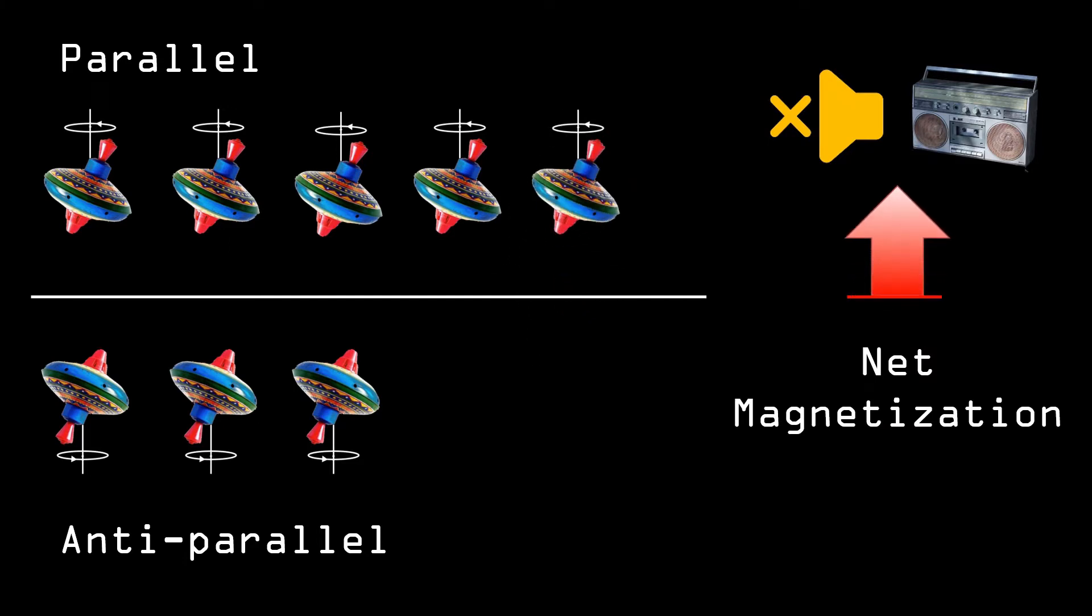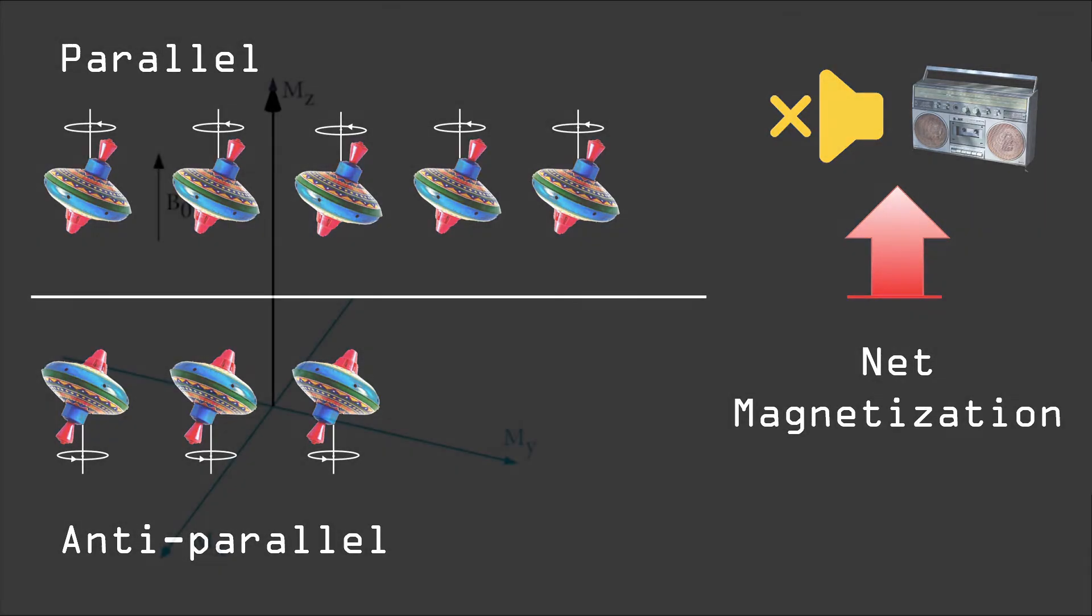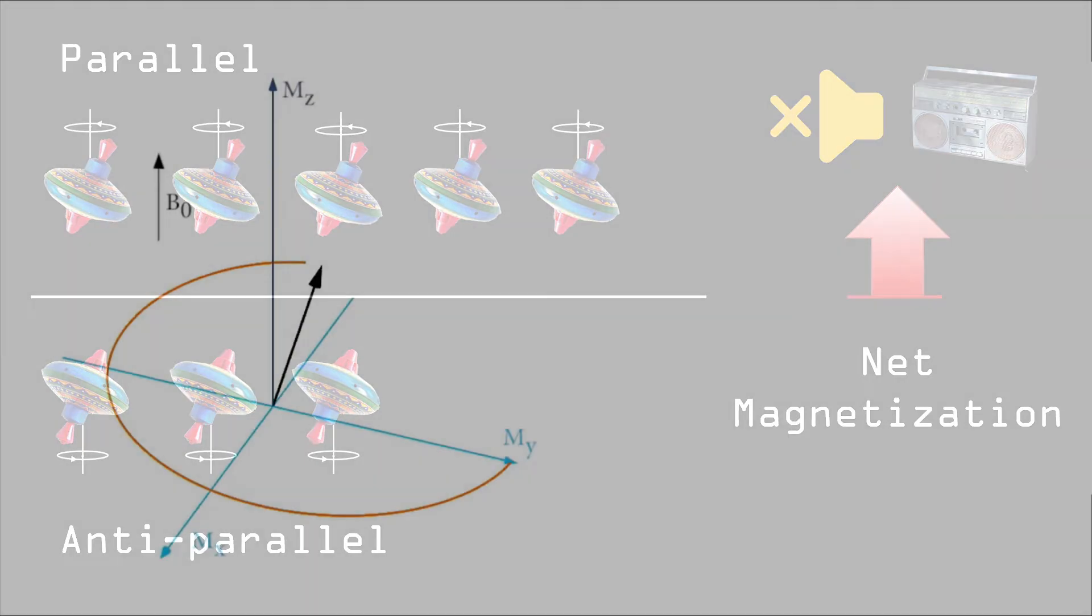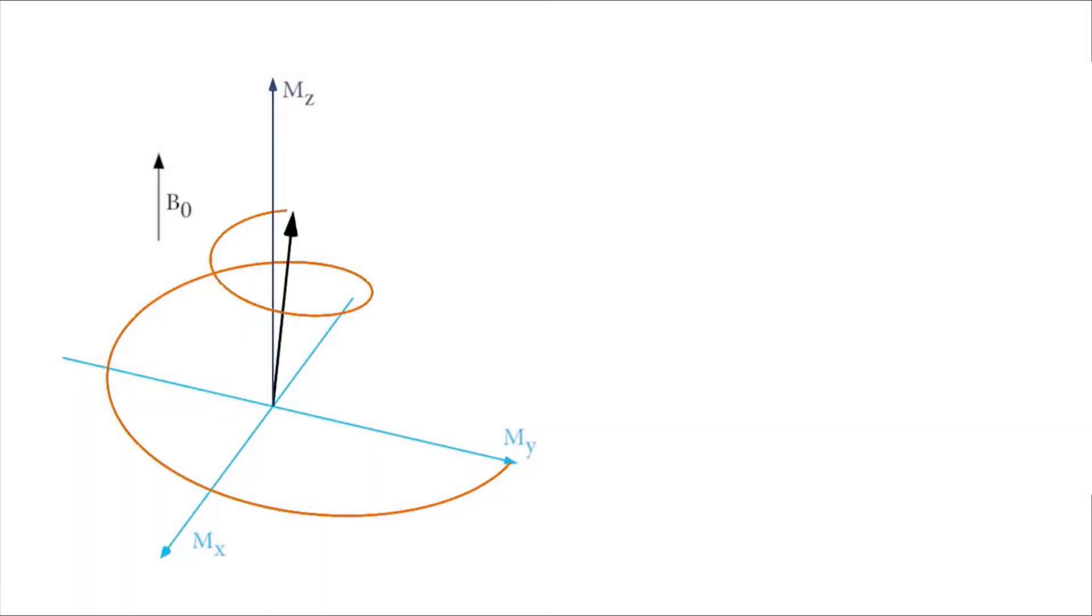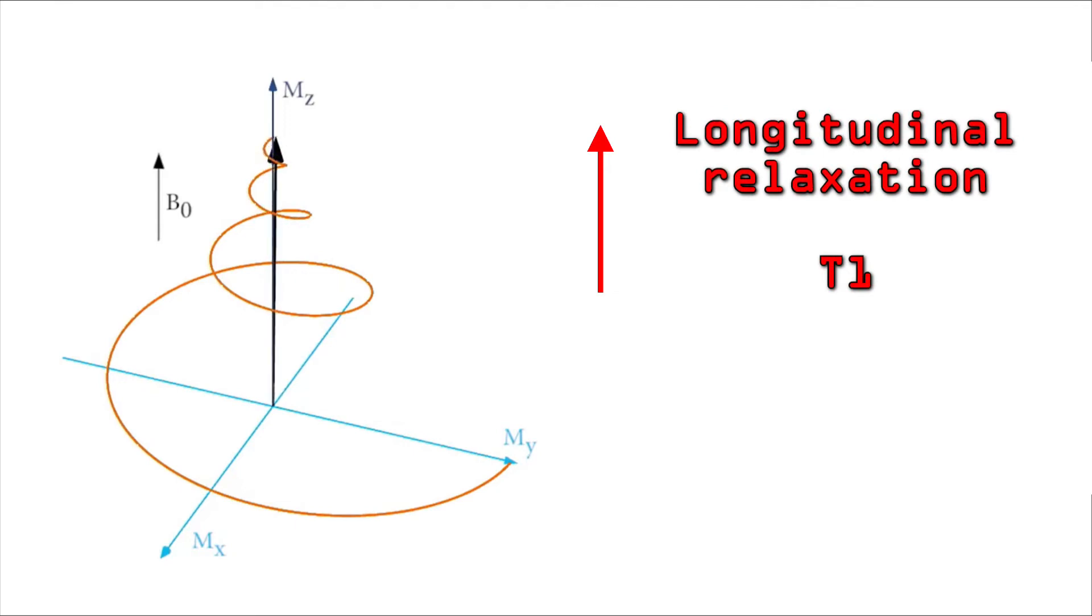The process of protons going back to their original position is referred to as relaxation. And in this particular example, the relaxation happens in the same direction as the magnetic field, in the so-called longitudinal direction. And therefore, we call this process longitudinal relaxation. And it is typically abbreviated as T1.